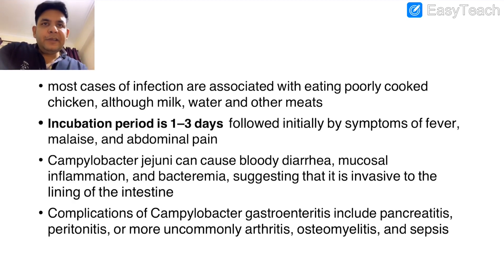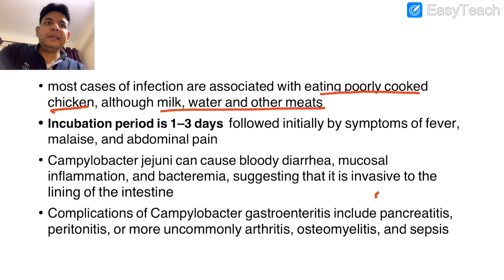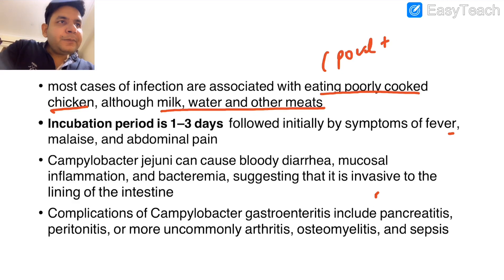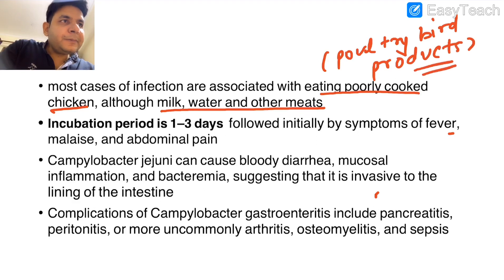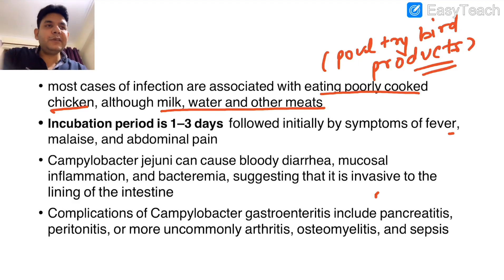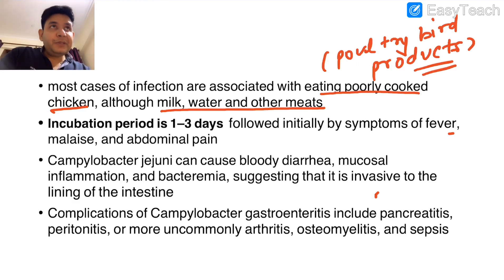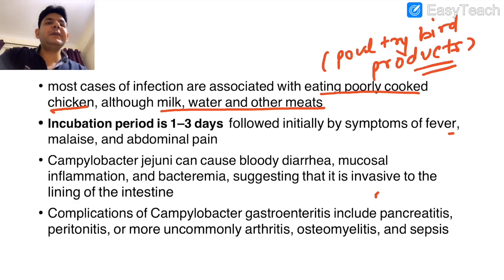Infection mostly happens from eating poorly cooked chicken, as that fellow had eaten in the cafeteria. Other sources include milk, water, and other meats, but mostly look out in the question for poultry bird products. If this history is there, immediately think of Campylobacter — though Salmonella is also there, the incubation period of 1 to 3 days and the appendicitis mention are features pointing toward Campylobacter.